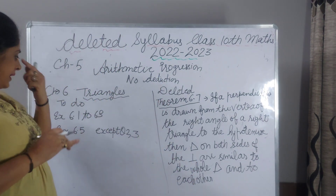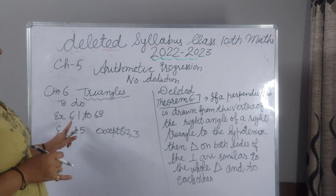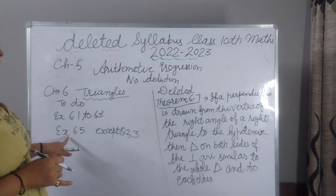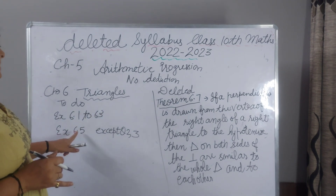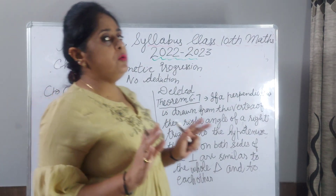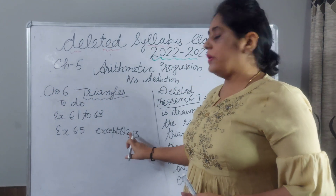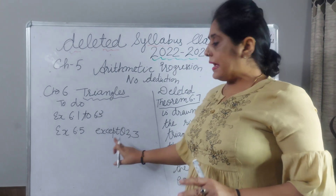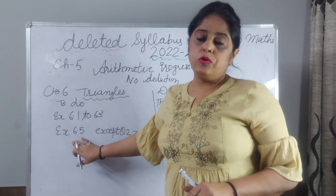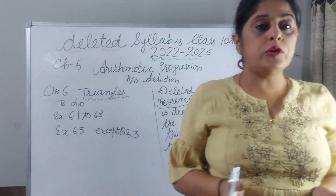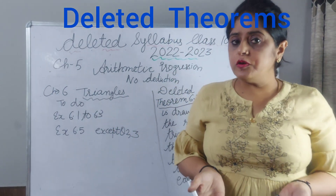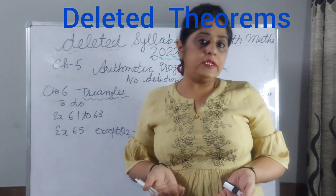For Chapter 6, Triangles, you have to do exercise 6.1 to 6.3 and exercise 6.5. In exercise 6.5, you have to leave only question 2 and 3; except those, all of 6.5 you have to do. Also, some theorems are deleted from your syllabus and theorem-based questions as well.